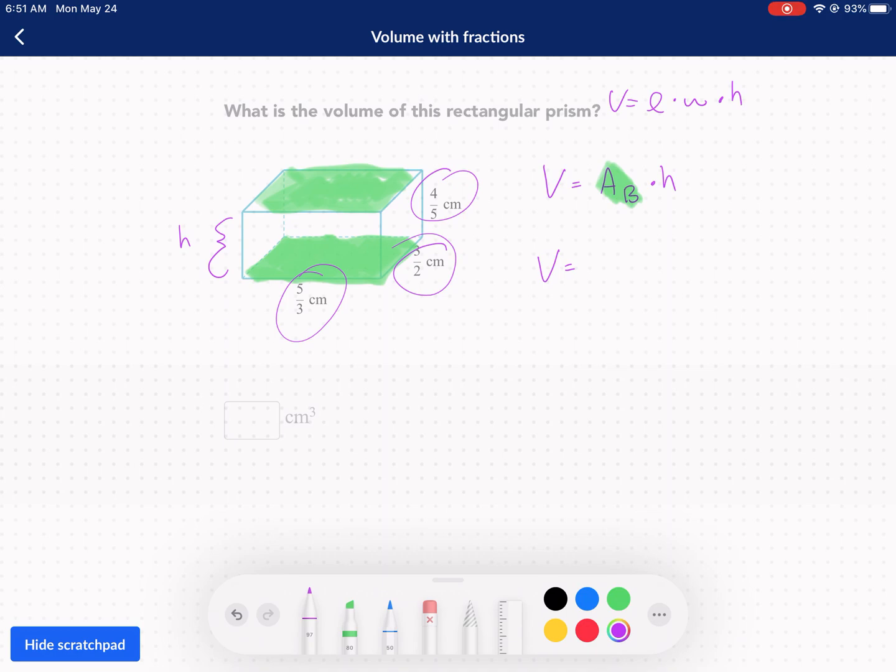Rectangular prisms are easy in that sense that we just have to multiply all the dimensions together. So we're going to multiply. Let me make sure I'm consistent with what I told you - that my height is in fact the distance between the two bases.